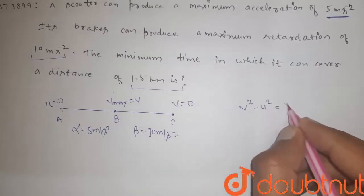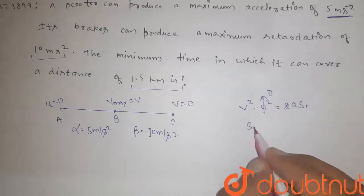Let it is S1. This is 0 because initial velocity is 0. S1, we get V square by 10.